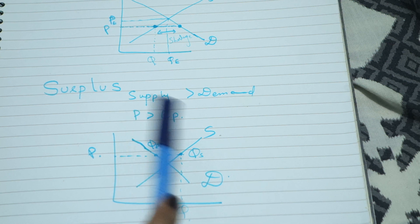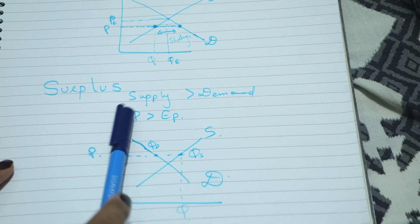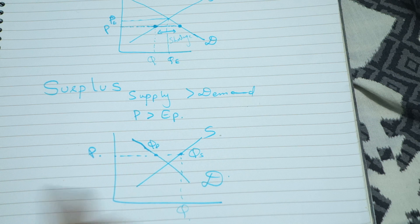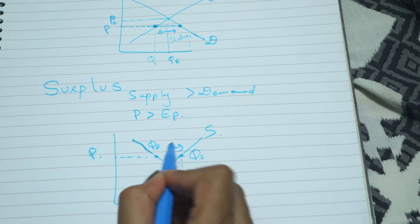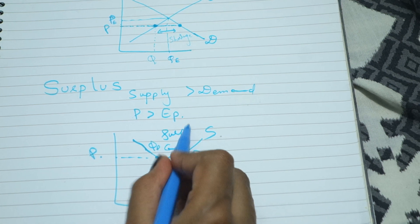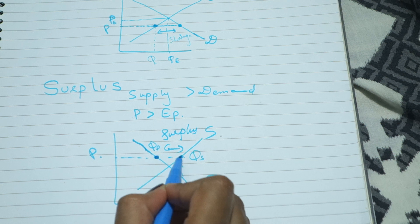Ye tab hoti hai jab aapki equilibrium price se price zyada ho. Toh ye aapki yaha pe surplus hai. Demand itni hai, supply itni hai.